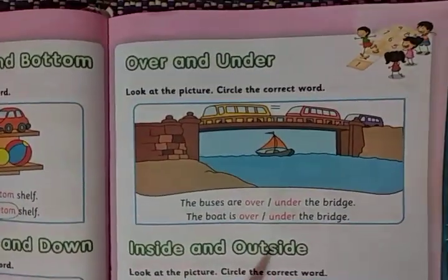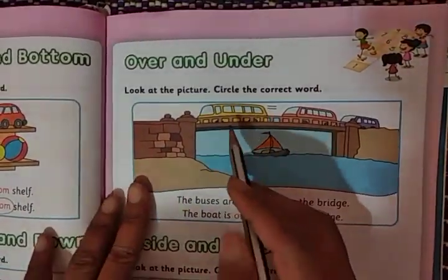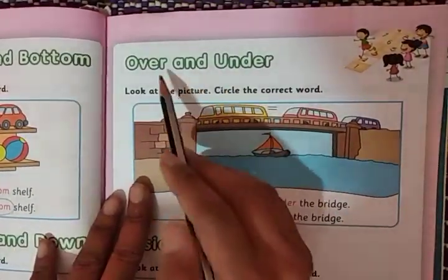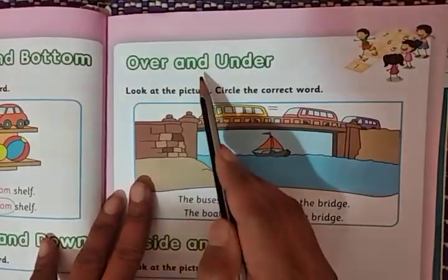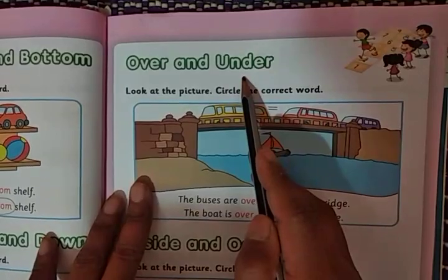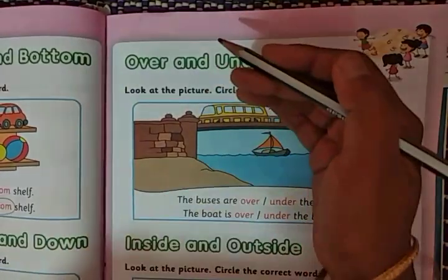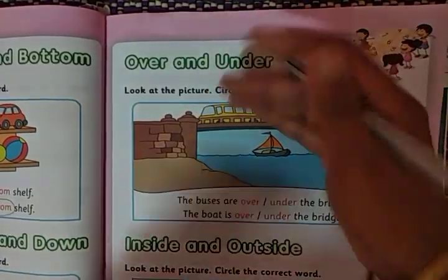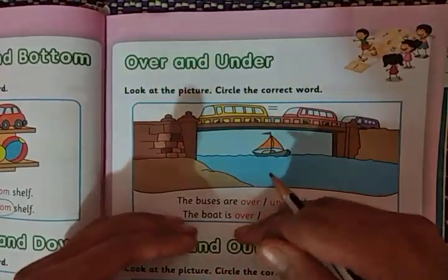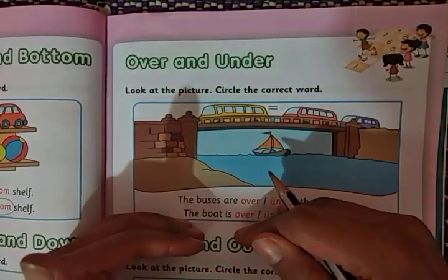Hello children. Now we will see another topic in literacy reading: over and under. Over means above. Under means down, below.